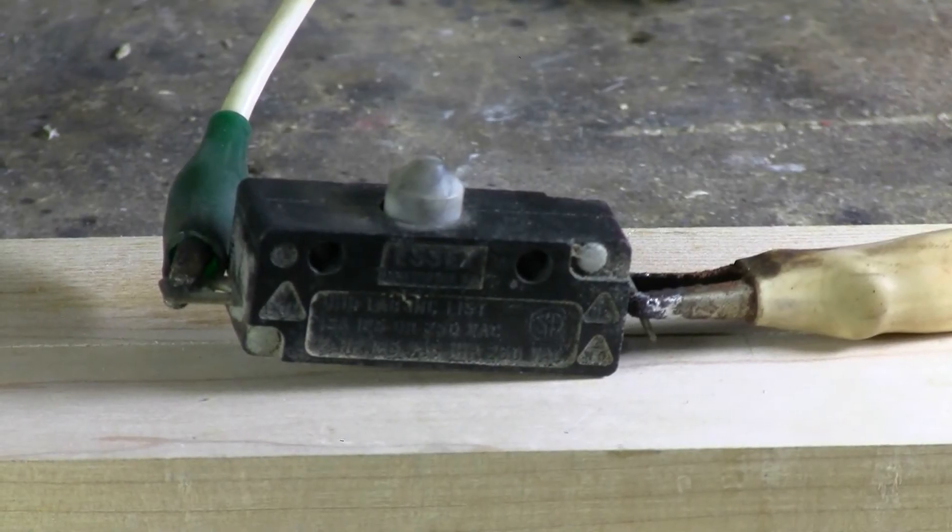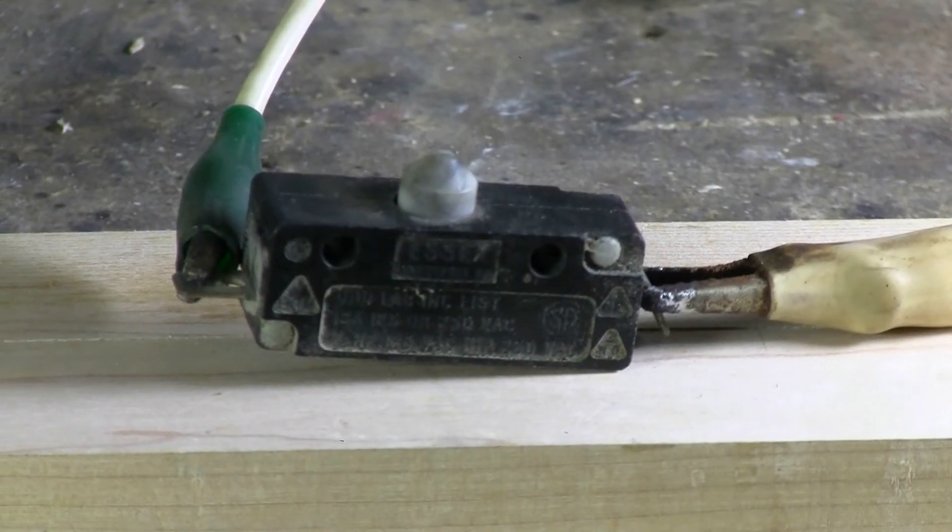Next up for this capacitor bank day is this little micro switch from a really old microwave oven. It doesn't seem to have the best contact anymore, so let's make sure it never has contact again.